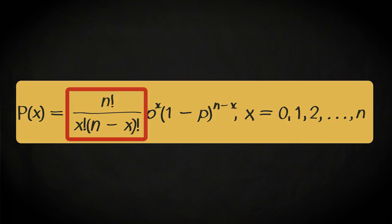This entire first term in the formula gives the number of ways you can select x elements, disregarding their order, from a set of n elements. It's also called the binomial coefficient and is sometimes written in this way.